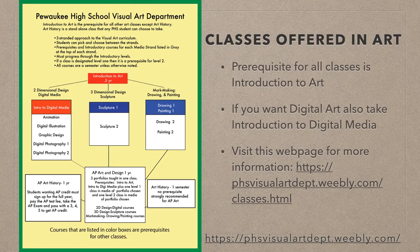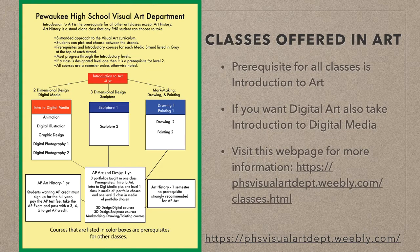This chart gives you a brief overview of the Pewaukee High School Visual Art Department and how our curriculum is organized. All students must take the prerequisite class called Introduction to Art if they want to take any other art course. After that, they qualify to move into the other strands. Our curriculum is divided into three strands: digital media, three-dimensional design, and mark-making. The digital media and two-dimensional design strand has an additional prerequisite of the Introduction to Digital Media course. We strongly encourage students to try to take both intro classes their freshman year — that way it opens up their schedule for the next three years. We offer intro courses, level one courses, and level two courses in all of the media strands.